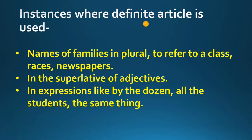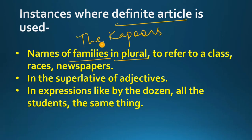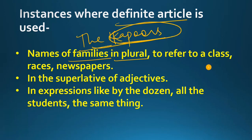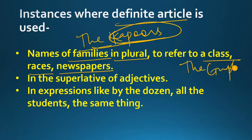Some more instances where the definite article is used — names of families in plural. For example, we say 'the Kapoors' — which refers to the Kapoor family. तो जब हम एक बड़े परिवार की बात करें, उससे पहले भी हम 'the' use करेंगे. When we refer to a class, race, or newspaper names — उससे पहले भी हम 'the' लगाते हैं. For example, 'the Tribune', 'the Hindustan Times', 'the Guptas', 'the Mauryas' — इस तरह इन सब words से पहले definite article use होता है.